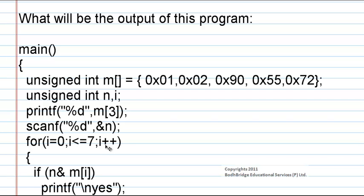What will be the output of this program? In the main function, an array m is declared as unsigned integer and is initialized to certain values. There are two more variables declared as unsigned integer. Then we are printing the value of m[3] — that is, the value held at index number 3 in the array m.